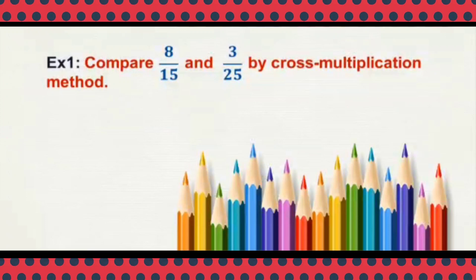Look at an example here: compare 8 by 15 and 3 by 25 by cross multiplication method. In this method we will not find the LCM. We just cross multiply to compare the given fractions.